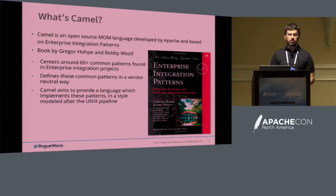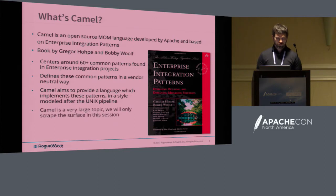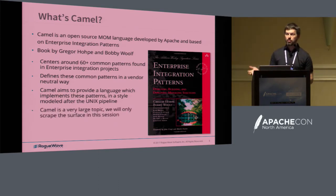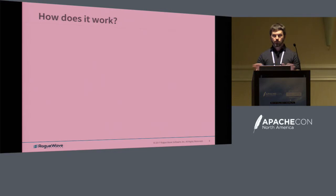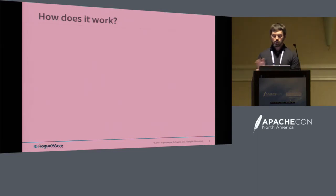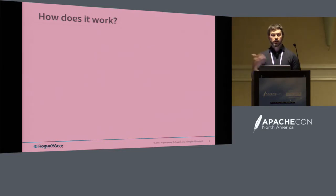Camel is modeled after the Unix pipeline, so everything has an input and an output. It's all based around messaging. Camel is a huge topic — there's a lot of inputs and outputs you can use with it, a lot of different processors available. You can even code your own. So we're just going to scratch the surface here, do a demo, talk about what it can do, and get you going to where you can start investigating it yourself.